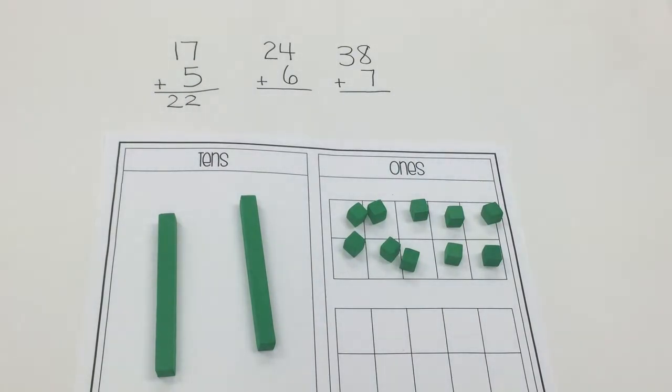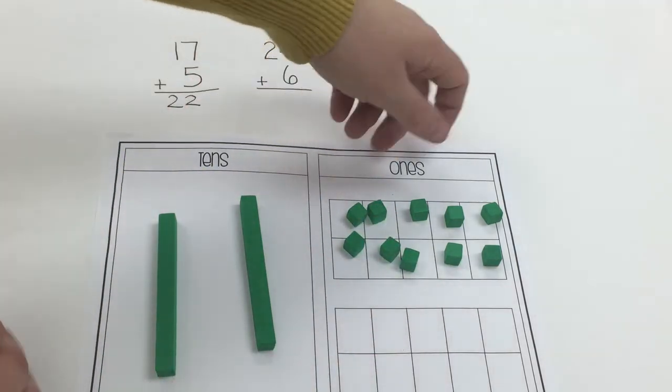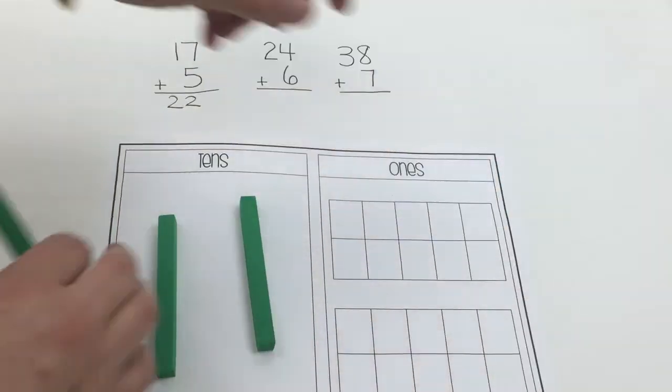Then I ask myself the question, do I have enough to make a 10? Can I regroup? The answer is yes, because the 10 frame is full. So here's where they're not physically connecting them together. They would literally just push those off,